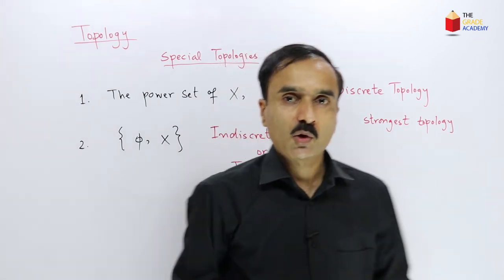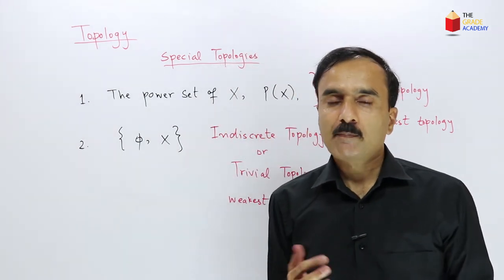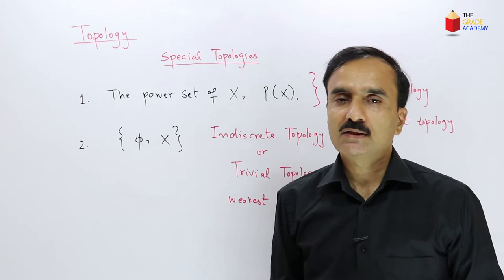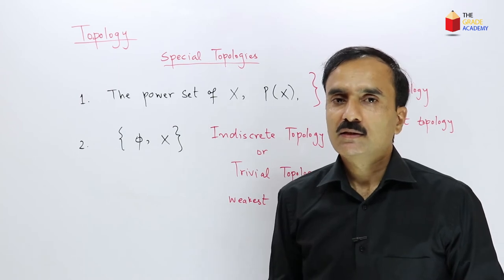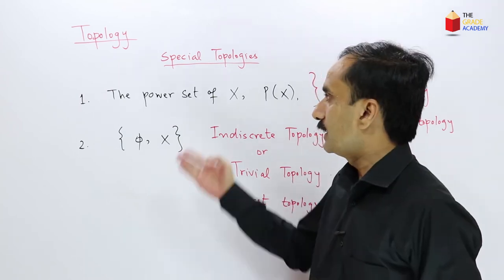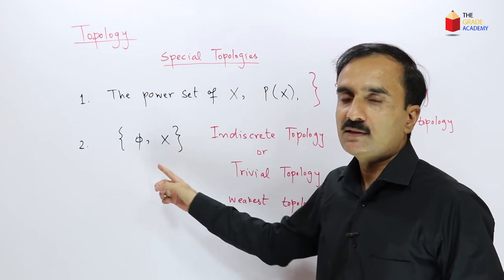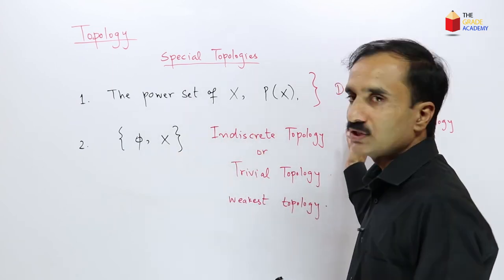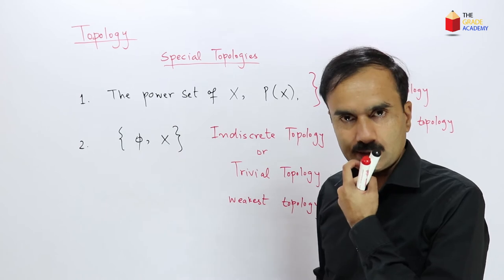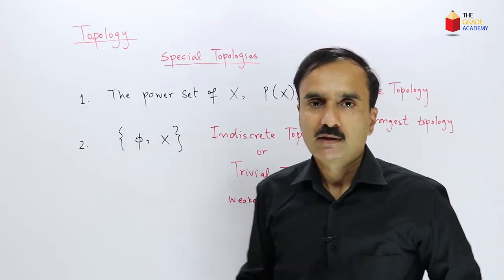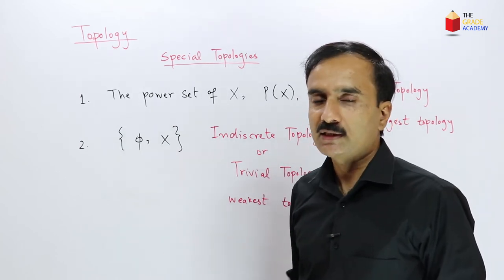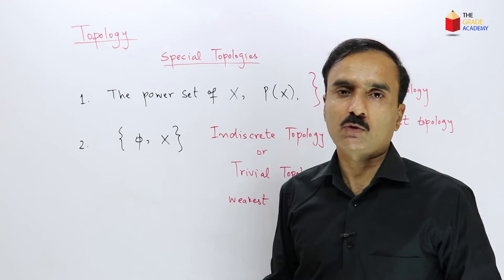Now let us take an example in which we take an actual set, consider its power set which gives the discrete topology, and the trivial topology, and see how they satisfy the conditions of a topology.